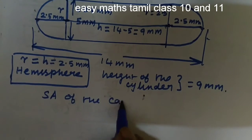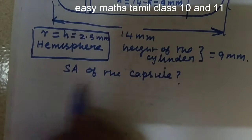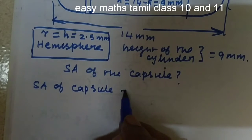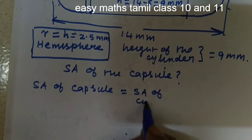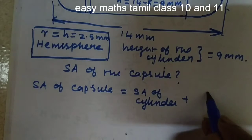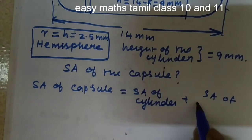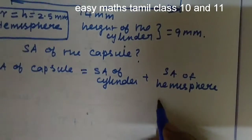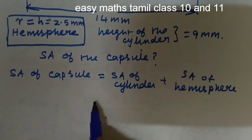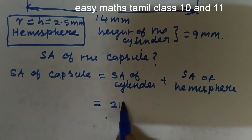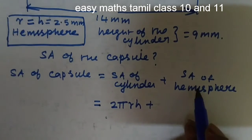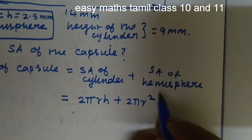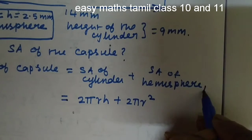Now, what we have to calculate is the surface area of the capsule. Surface area of the capsule equals the curved surface area of the cylinder plus the curved surface area of the hemispheres. The curved surface area of the cylinder formula is 2πrh, and the curved surface area of a hemisphere is 2πr². So: 2πrh plus 2πr² plus 2πr² for hemisphere 1 and hemisphere 2.